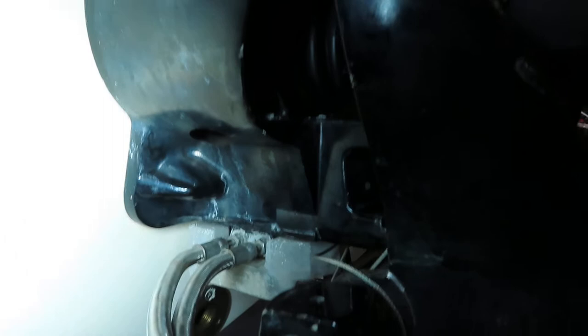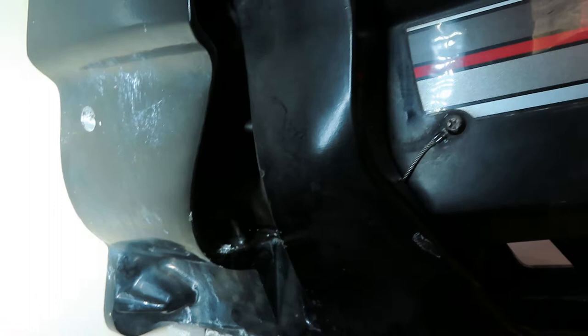This has an Alpha 1 Gen 2 outdrive on it. The job I did today was to replace the exhaust bellows. You can see them back in there. See that kind of accordion right in the center of your screen. It's a rubber boot that transfers the exhaust to the outdrive through this port right at the bottom.